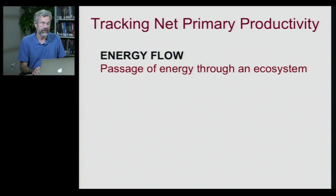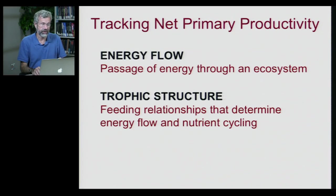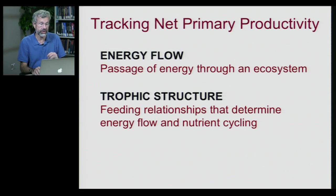We want to track what happens to all of this plant material — what happens to the net primary productivity. First, we'll be looking at energy flow, which is the passage of energy through an ecosystem. In order to do this, we need to keep track of different trophic structures. Autotrophs produce their own food; heterotrophs have to eat something else. So trophic structure refers to the feeding relationships that determine energy flow and ultimately nutrient cycling.